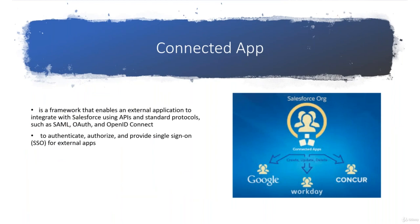So first, there is something called Connected App. What is Connected App and how can I use it? Whenever you have a Salesforce org and you are going to communicate to different systems or different applications, in between you can use Connected App. A Connected App is like a framework which enables all external applications to integrate with Salesforce using APIs like SOAP API, REST API, or using standard protocols like SAML or OpenID Connect.